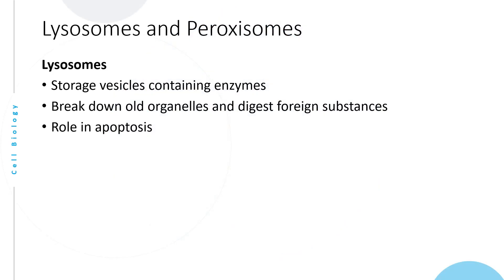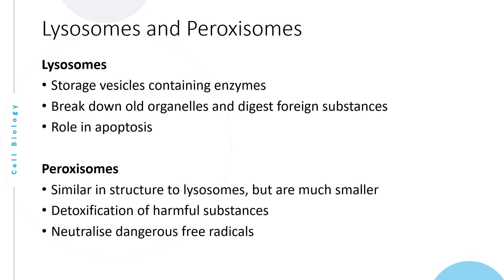Lysosomes are small vesicles found within the cytoplasm containing enzymes. These enzymes break down old organelles and help digest foreign substances. They also play an important role in apoptosis. Peroxisomes are similar in structure but even smaller than lysosomes. The chemicals contained within peroxisomes detoxify harmful substances and help neutralize dangerous free radicals.